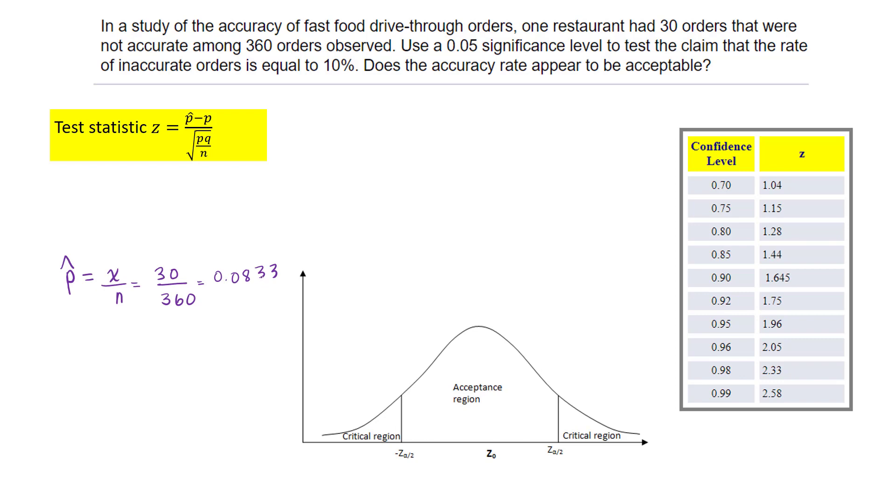Using a 0.05 significance level to test the claim that the rate of inaccurate orders equals 10%. Our hypothesis test has population proportion p equals 0.10. Remember this is population proportion, not sample proportion.